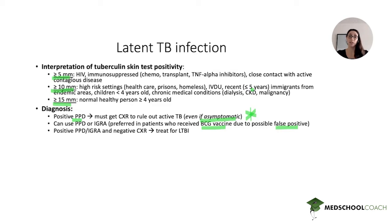The diagnosis of latent TB infection is defined by a positive PPD or positive interferon gamma release assay plus a negative chest X-ray. If both of these criteria are met, latent TB is diagnosed and treatment is warranted, because the patient is at risk of reactivation and we want to eradicate the infection.